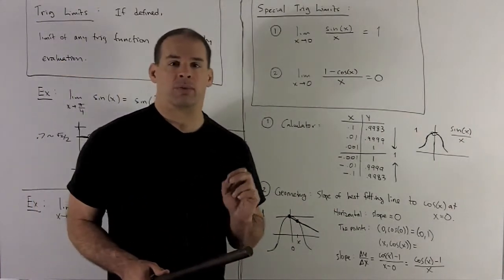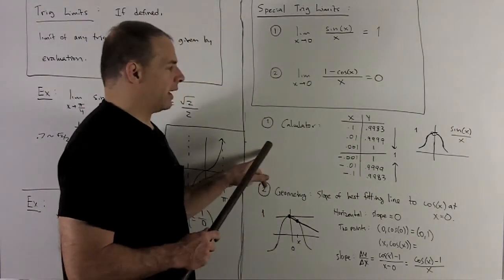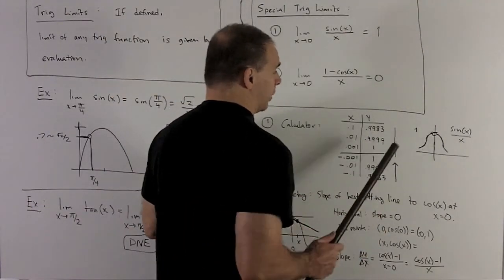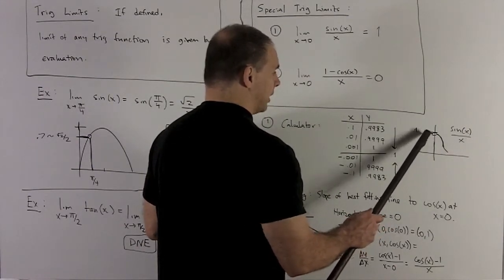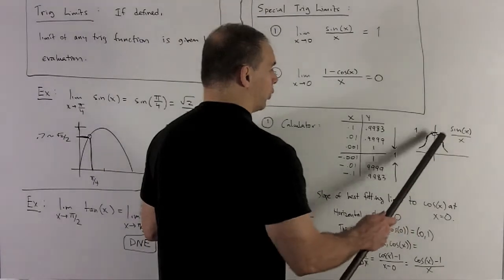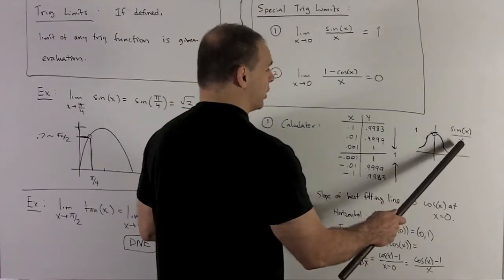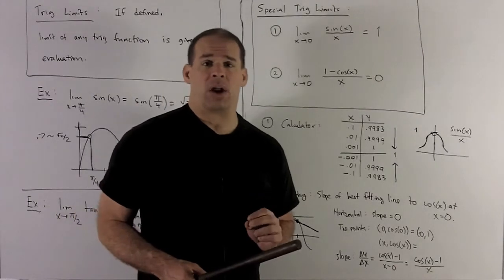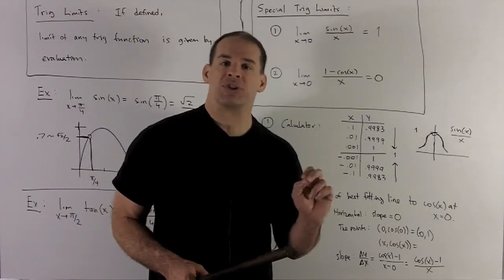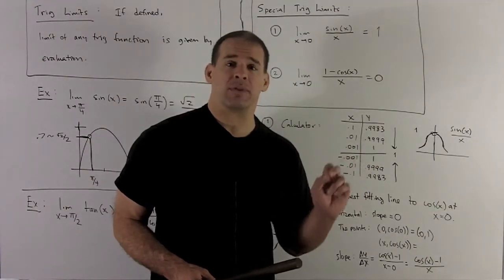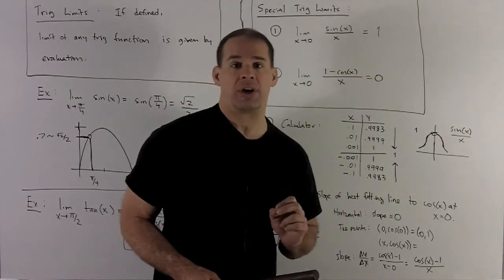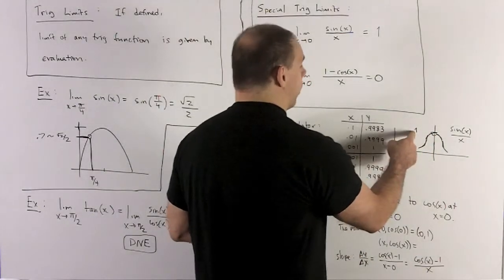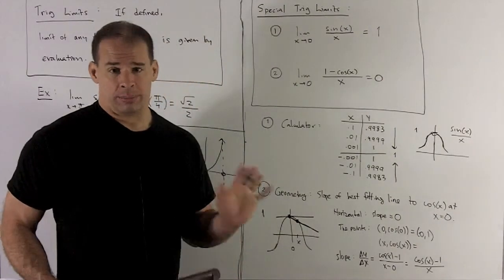For the first one, we won't give a rigorous proof — we'll just try to get the idea. One option is to go to a computer, take the graph, and see what's happening. The function looks really nice except at 0, because putting 0 in gives 0/0. If you get 0/0 when taking a limit, that always means you need to do more work. On the graph, the best fitting point has a y-value equal to 1.